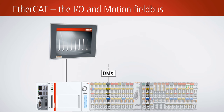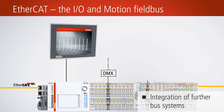The flexibility of the EtherCAT terminal system enables the integration of further bus systems such as Profibus or Ethernet TCP-IP. EtherCAT terminals are available for all digital and analog signal types encountered in the world of automation.